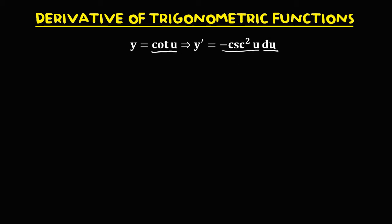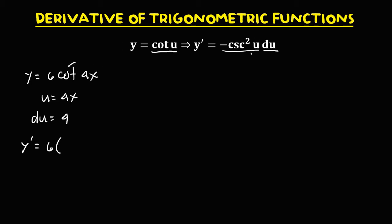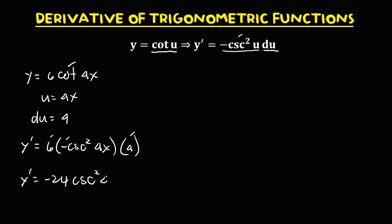For the derivative of cotangent u, that's negative cosecant squared u times du. So if we have y equals 6 cotangent 4x, u equals 4x and the derivative of u is 4. To find the derivative: 6 times negative cosecant squared 4x, times du, that's 4. So y prime equals 6 times negative 1, that's negative 6, and negative 6 times 4, that's negative 24, times cosecant squared 4x.